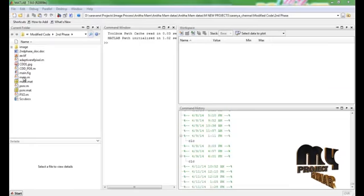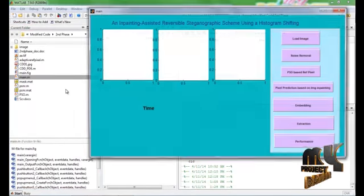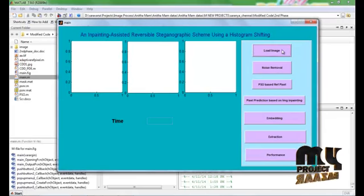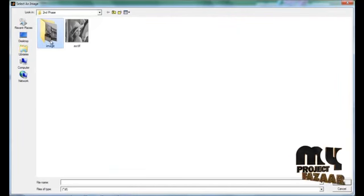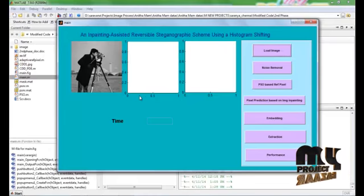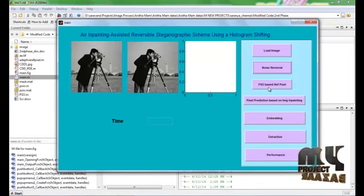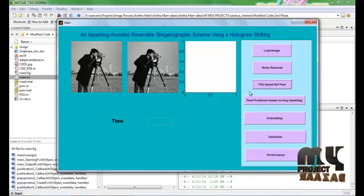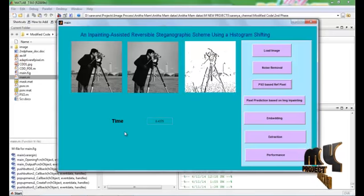Open the source code folder. Run main.m file. A new design guide window is appeared. Select the input image. Select any one of the images. Then apply noise removal technique, i.e. median filter. Choose the reference pixel based on the particle swarm optimization. The adaptive reference pixel is chosen and displayed here in this axis. And the reference pixel choosing time is 6.43.